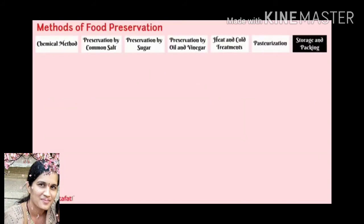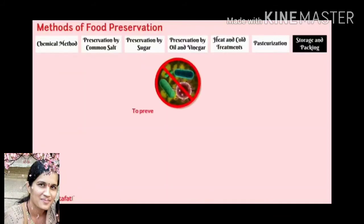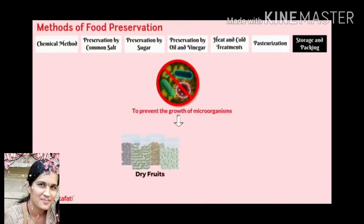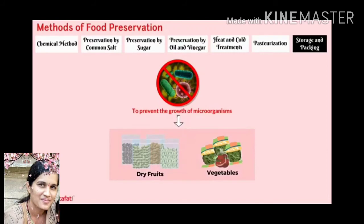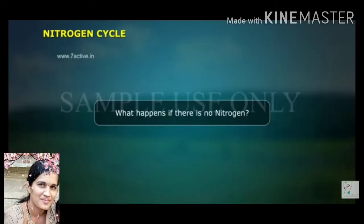Storage and packing also prevents the growth of microorganisms. Some dry fruits and vegetables are packed in polythene bags and sealed in airtight packets, which prevents the growth of microorganisms.